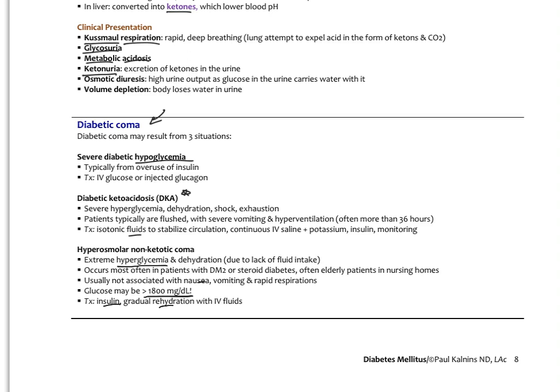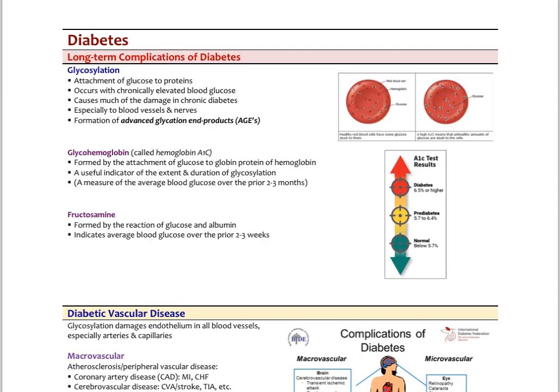Diabetic ketoacidosis is probably the biggest short-term complication to keep in mind. Where we're most worried about things like type 2 diabetes, though, are the chronic long-term complications, and that happens through glycosylation — the attachment of glucose to proteins. This typically occurs with any elevated blood glucose over time and causes most of the damage in chronic diabetes. Glycosylation happens on red cells, in capillary beds, and on peripheral nerves. The combination of glucose with proteins forms what are called advanced glycation end products, or AGEs, which are the hallmark of glycosylated tissue damage.